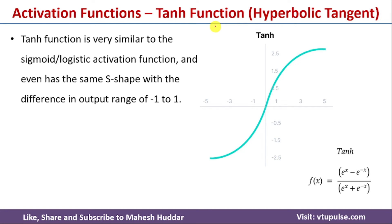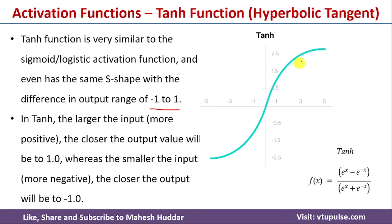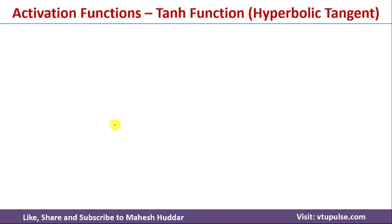The second non-linear activation function is tanh, or hyperbolic tangent. In this case the output is in the range of −1 to +1, whereas the sigmoid activation function output was in the range of 0 to 1. If the input is on the higher side the output will be 1, and if the input is on the lower side the output will be −1.